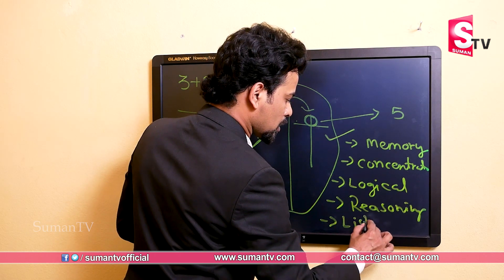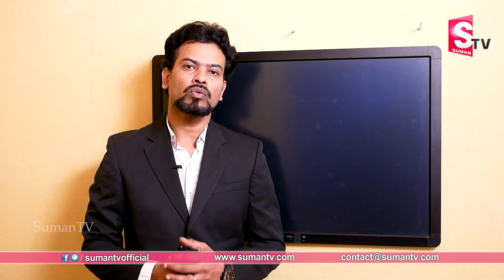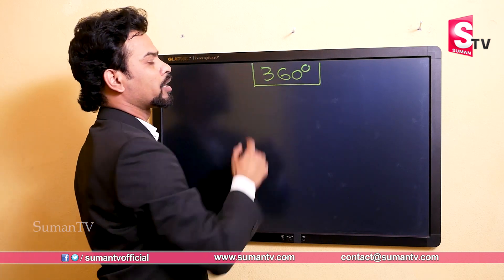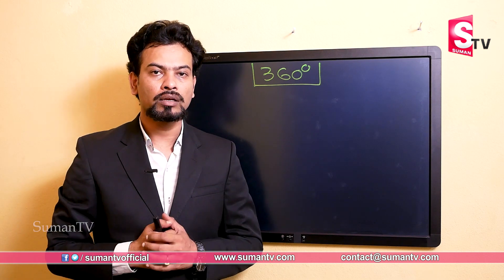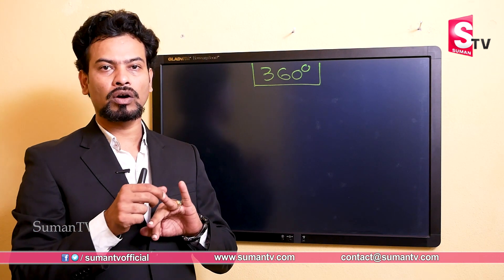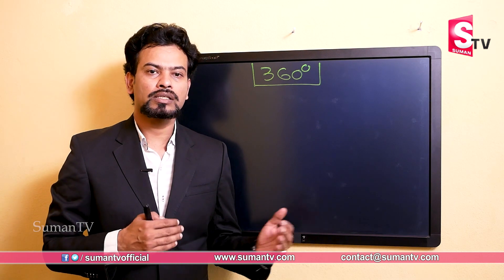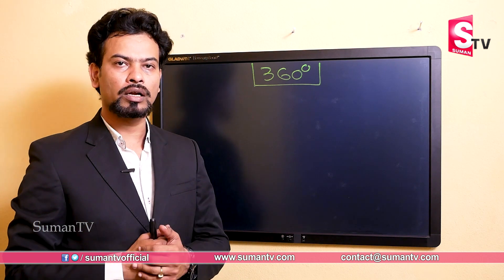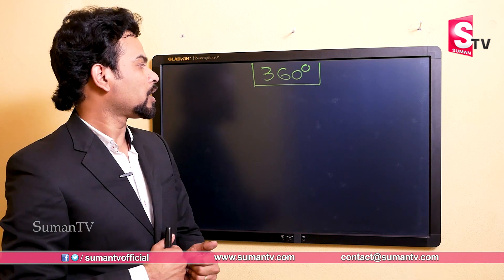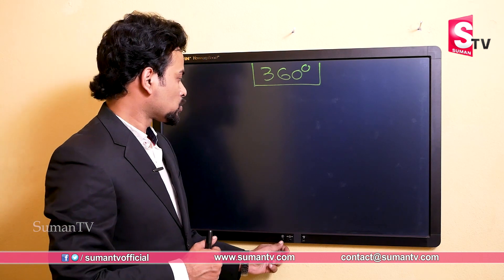The right-hand side brain is mainly responsible for memory, concentration, logical power, reasoning power, and listening skills. So in abacus, we are not only improving the math part — we are working on 360-degree brain development, using our whole brain. As students do math, they also improve memory power, concentration, analytical skills, reasoning skills, and listening skills. Once all these skills are developed, their math will improve a lot and they will get overall development in their career — good marks as well as strong analytical, reasoning, and problem-solving skills.